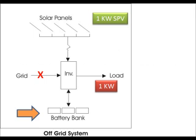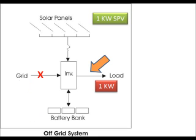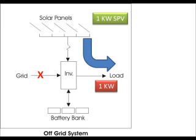Off-grid setups are similar to inverters we normally use in our homes or offices. It incorporates batteries, and grid power is connected to the input while the load is connected to the output of the inverter. We also connect power from solar panels. Let's assume that the load is 1 kilowatt and generation is also 1 kilowatt — the load draws full power from the solar panels.